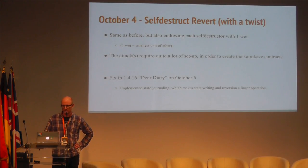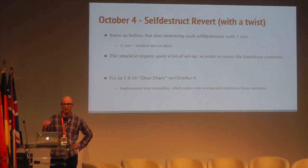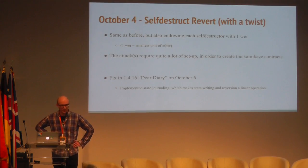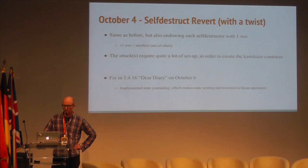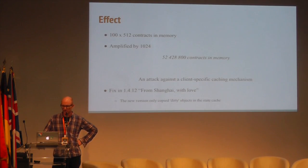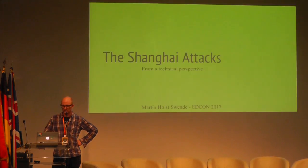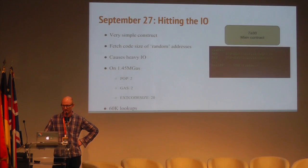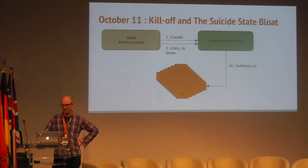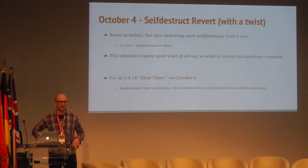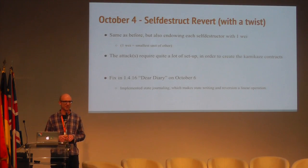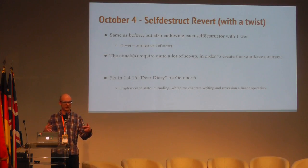As we were monitoring this, we could also see that the creation of these kamikaze contracts stopped, and then started again — but now with a pattern where each suicide contract was endowed with one wei, the smallest unit. Because the earlier fix had been to no-op a zero transfer of value, by endowing each contract with one wei, the attacker could also hit against that particular optimization rolled out about a week before. That was really an instance of the attacker trying out an idea, realizing how to make it even better, and just switching tracks.